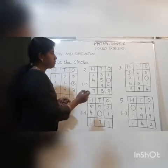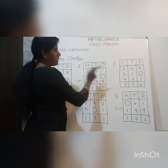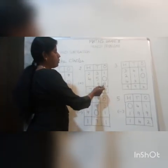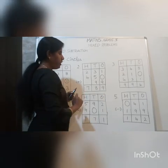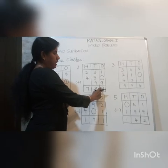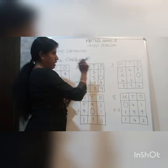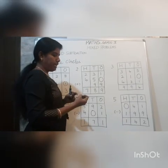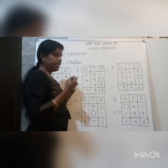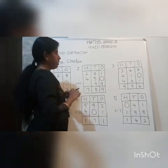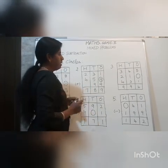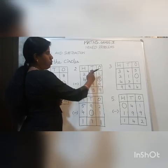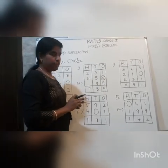Let us do one more sum. We need to find the number for the next circle. First, we add the remaining two numbers: 9 plus 1 is 10. But the digit shown is 9, which means the answer here was 19, and we carried over 1. Counting from 10 up to 19 gives us 9 more. So 9 is the missing number. 9 plus 1 is 10, plus 9 more is 19, with 1 carry over — confirmed.